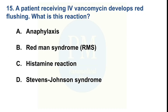A patient receiving IV vancomycin develops red flushing. What is the reason? Option A: anaphylaxis. Option B: red man syndrome (RMS). Option C: histamine reaction. Option D: Stevens-Johnson syndrome. The correct option is Option B — red man syndrome (RMS).